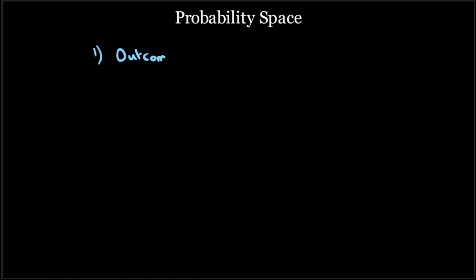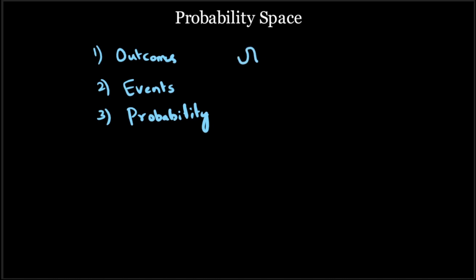The probability space of any random experiment can be characterized by three features. One, what are the possible outcomes of that particular random experiment? Two, what are the different events that can be observed and measured during that random experiment? And three, how do we measure the probability of these events? So the probability space is defined by the outcomes omega, the set of all measurable events also called sigma algebra, and the probability measure P.